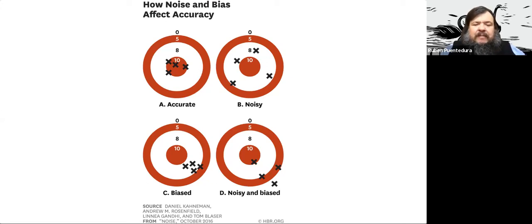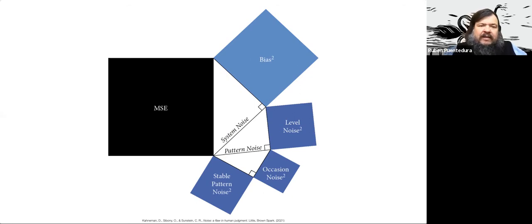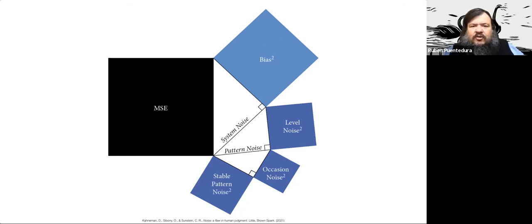So we need to get a little deeper into the sources of noise. Let me show you a diagram from a more recent book co-authored by Kahneman. When you have different sources of distance from what you would like as an accurate result — whether it's the best way to use a resource on a campus or the best way to assess student learning — you have these different sources. This diagram is related to the math of this, though I'm not going to get into the math today. Bias we have an intuitive notion about, but Kahneman and his team also identify level noise, occasion noise, and stable pattern noise.